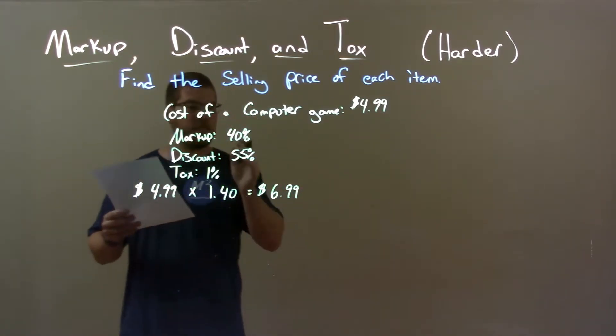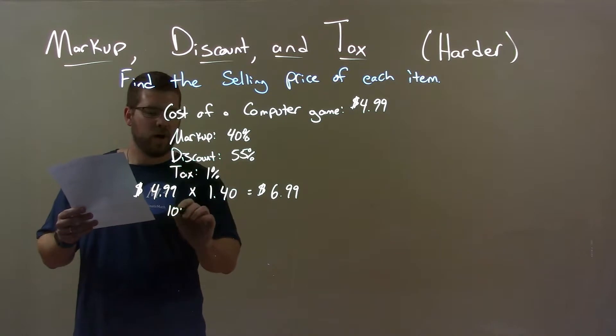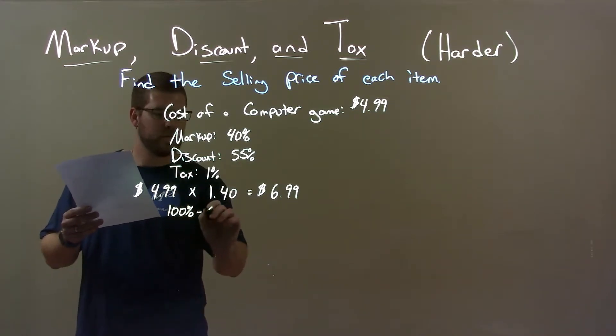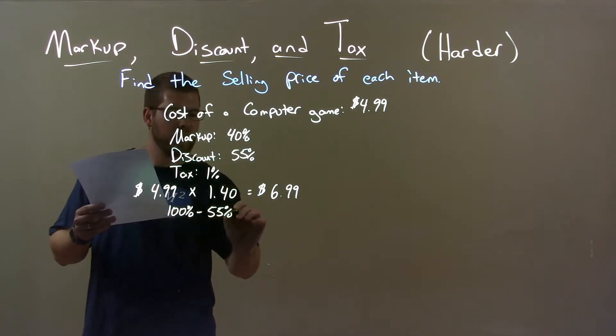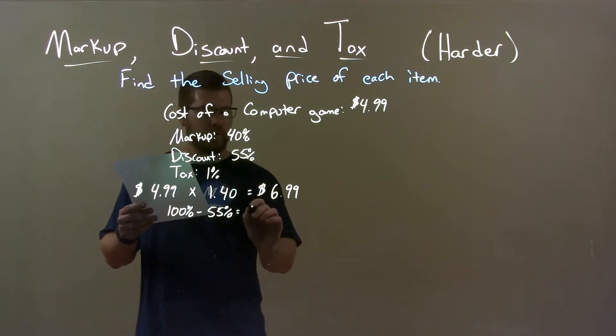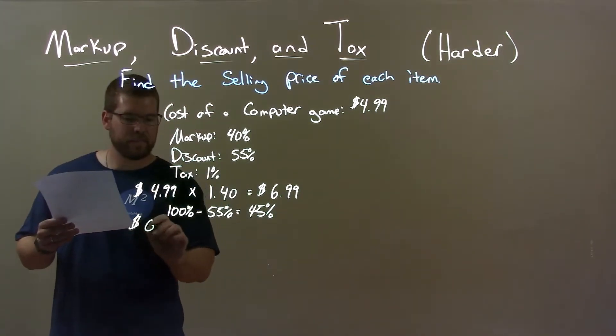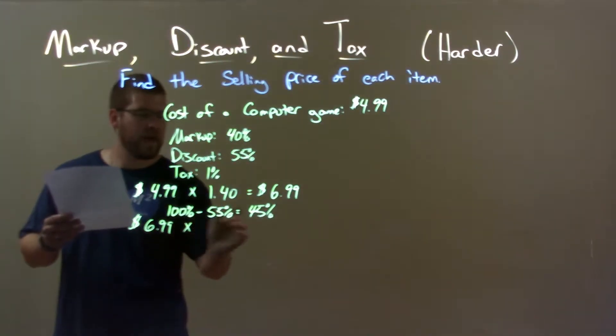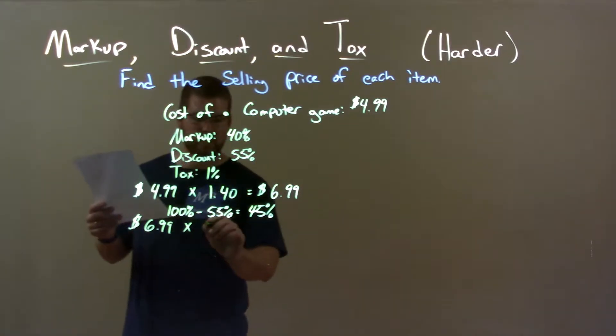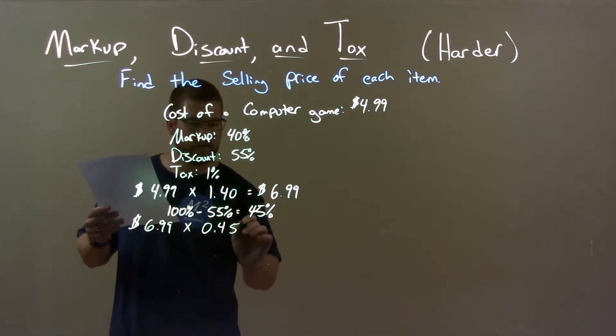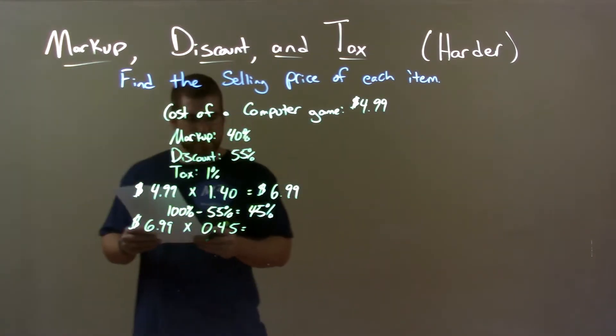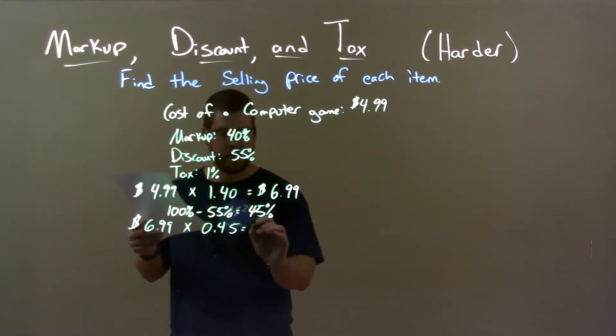Now, we have to apply the discount of 55%. We take 100% minus the 55%, which is the discount, and that lets us know that we're going to pay 45% of this price, $6.99. So, we take the $6.99 and we multiply that by 45% as a decimal, 0.45, which gives us an after discount price of $3.15.